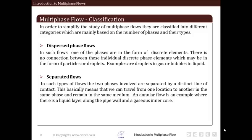Let us first have a look at dispersed phase flow. In such flows, one of the phases is in the form of discrete elements. We do not see any connection between these individual discrete phase elements, which may be in the form of particles or droplets. An example of such type of flow is gas or bubbles in liquid.